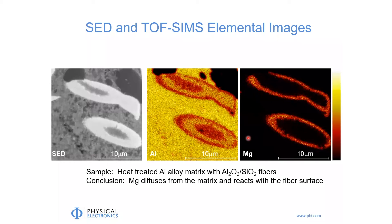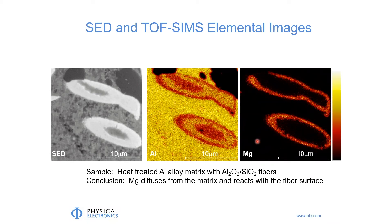You might ask why we don't see magnesium in the aluminum alloy matrix but we do see it in the fibers. It's not necessarily because there's more magnesium in the fibers than in the matrix. This is an example of one of the more difficult aspects of SIMS: its sensitivity to a given element and its chemical environment. The sensitivity to magnesium in this aluminum alloy matrix is much less than the sensitivity to magnesium in the oxide matrix of the fibers. The magnesium signal is enhanced in this oxide matrix relative to that of the aluminum alloy matrix, which has much less oxygen in it.